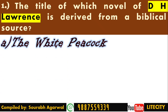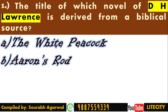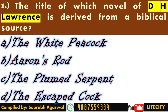The options are: The White Peacock, Aaron's Rod, The Plumed Serpent, and The Escaped Cock. You have to identify which novel has a title derived from a biblical source. The answer is Aaron's Rod. Aaron is a biblical character who is basically a flute player, and in this novel the protagonist himself is a sort of flute player.